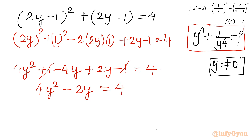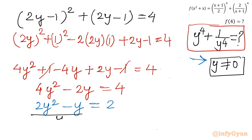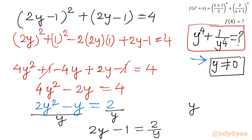This equation is divisible by 2, so dividing both sides by 2 gives 2y squared minus y equal to 2. Since y is not equal to 0, we can divide both sides by y, giving 2y minus 1 equal to 2 over y. Rearranging, 2y minus 2 over y equal to 1.